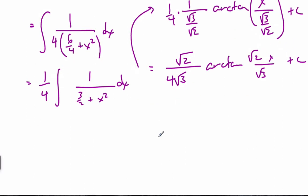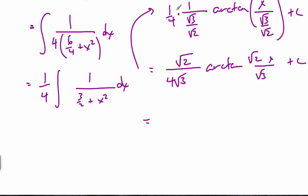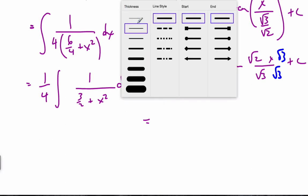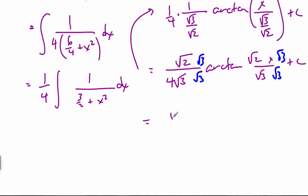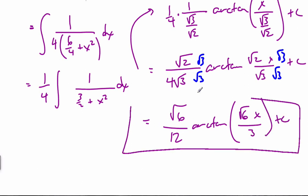We should rationalize it and put it in proper form. So if I multiply this by root 3 over root 3, and root 3 over root 3, I end up with root 6 over 12. Arctan, root 6x over 3, plus c. And this is my antiderivative.